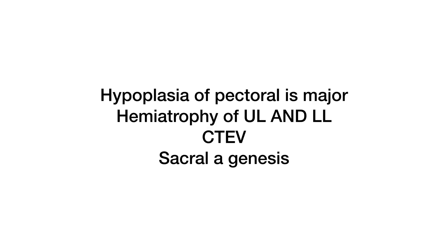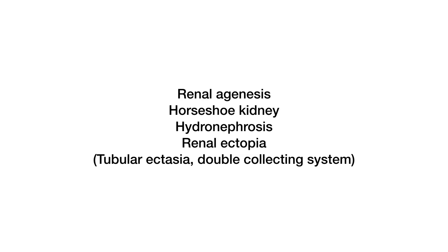Additional findings include hypoplasia of the pectoralis major, hemiatrophy of the upper and lower limbs, congenital talipes equinovarus, and sacral agenesis. Renal system abnormalities can include renal agenesis, horseshoe kidney, hydronephrosis, and renal ectopia.